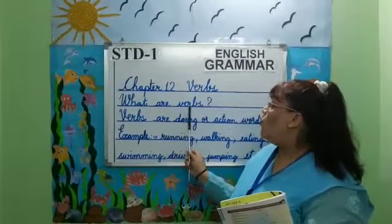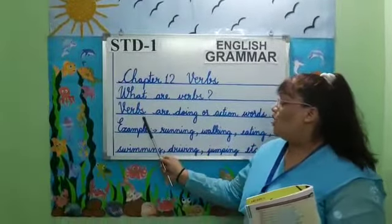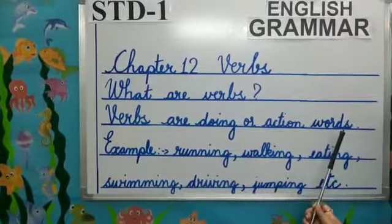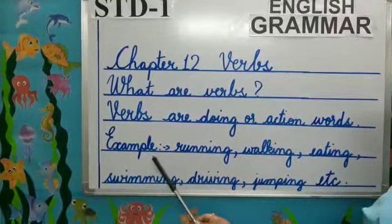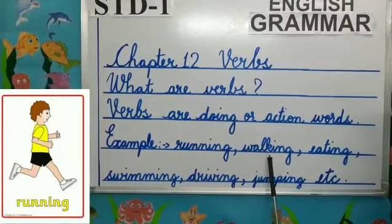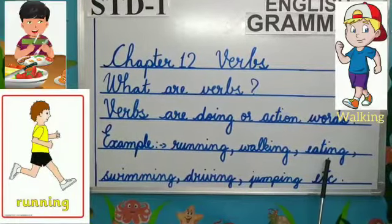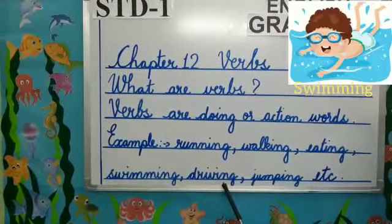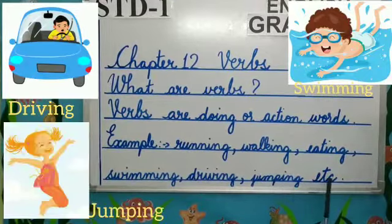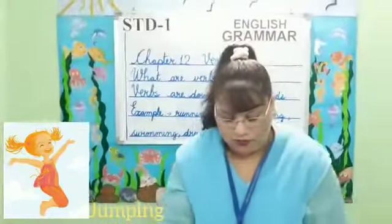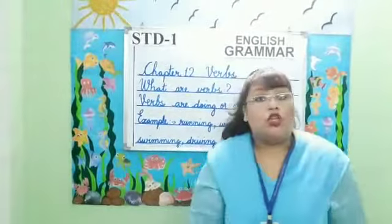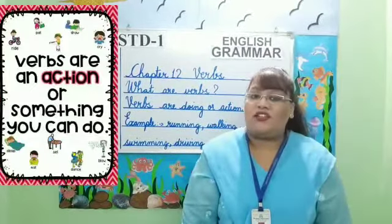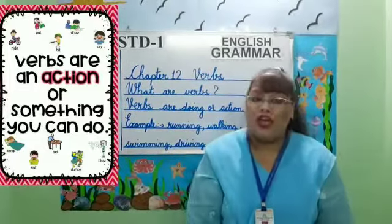What are verbs? Verbs are doing or action words. For example: running, walking, eating, swimming, driving, jumping, etc. The words which show that some action is taking place — they are all known as verbs.